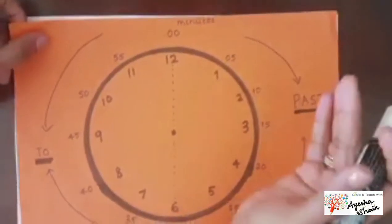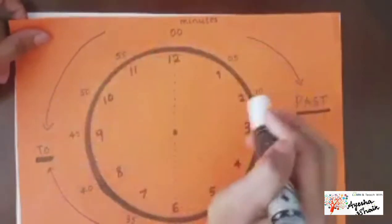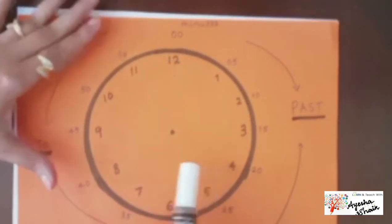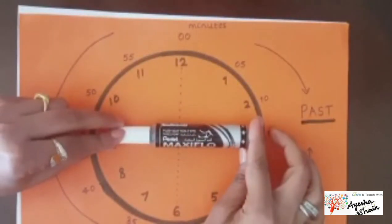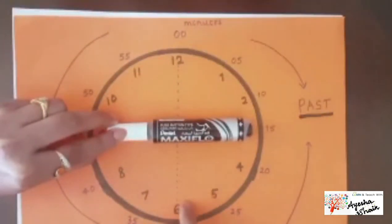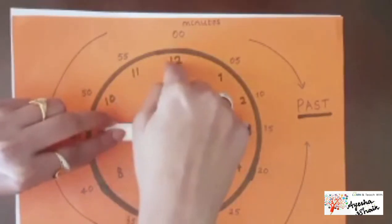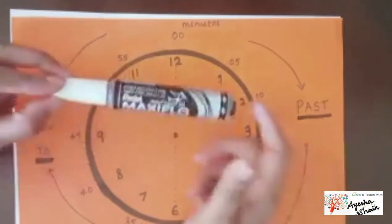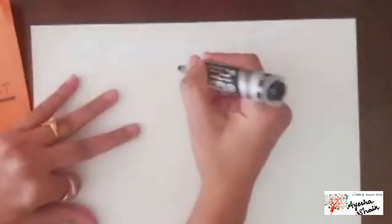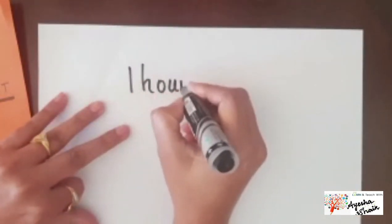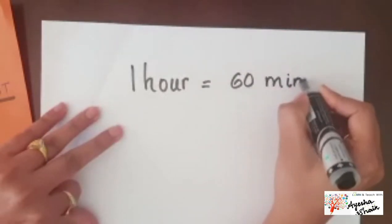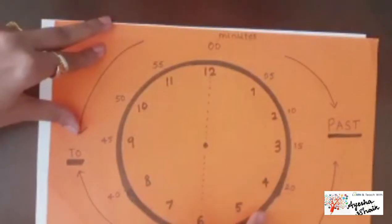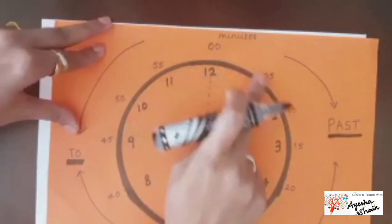Now does what we learned about the circle apply to the clock as well? Yes it does. When the clock is divided into two parts it's called half, and when divided into four parts it's called quarter. So there are four quarters on a clock. To know how many minutes are in each quarter, you need to know how many minutes are in one hour — and in one hour we have 60 minutes.